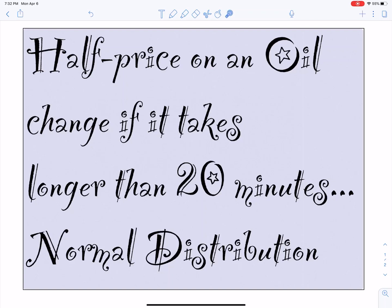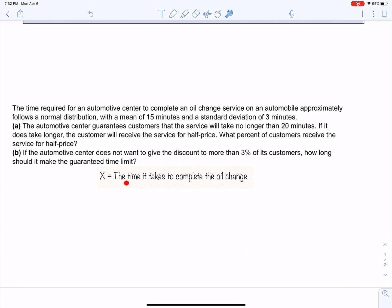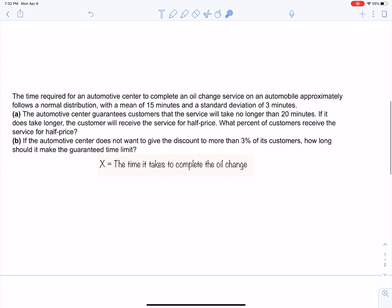I want to talk about a question where a company gives an oil change for half price if it takes longer than 20 minutes. This is dealing with a normal distribution, not a binomial distribution, because time is the random variable. The time it takes to complete the oil change is a continuous random variable, so we're dealing with a normal distribution.